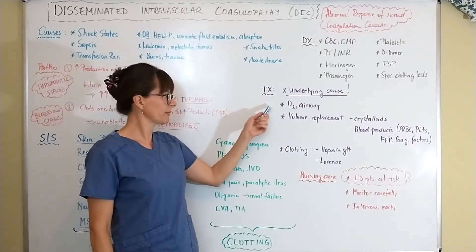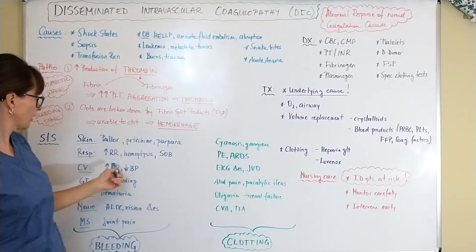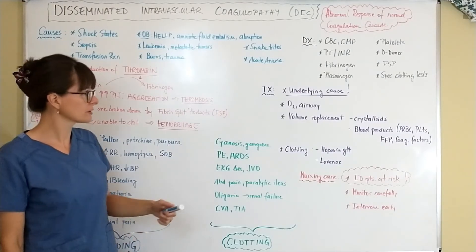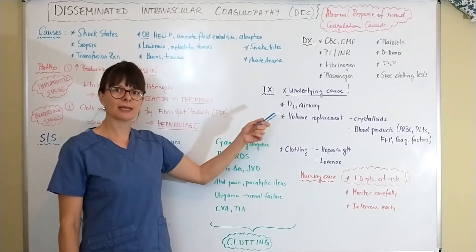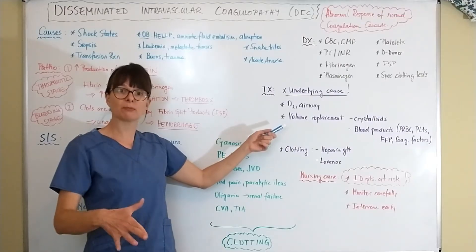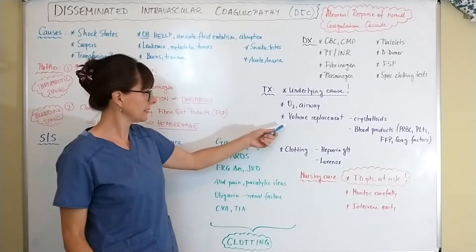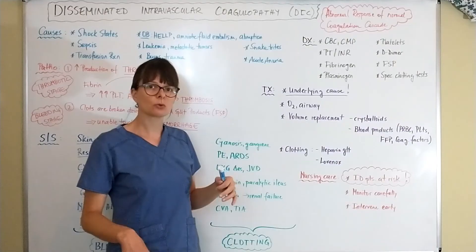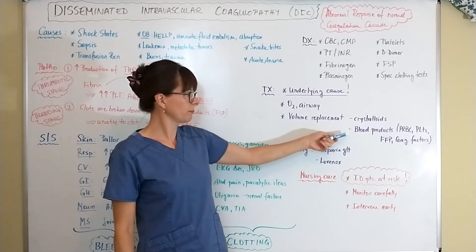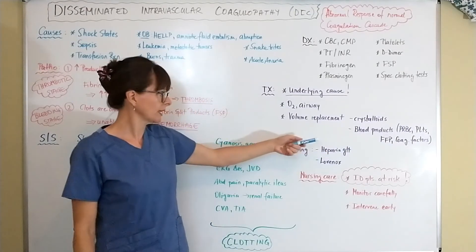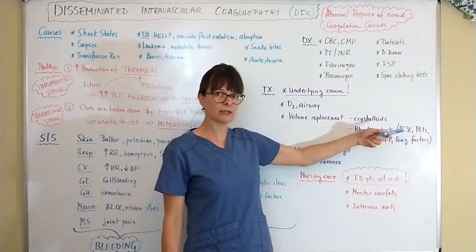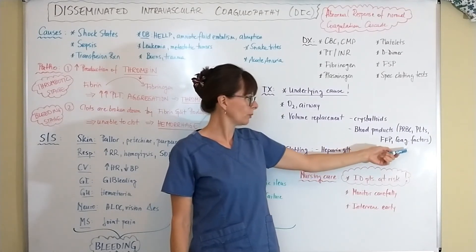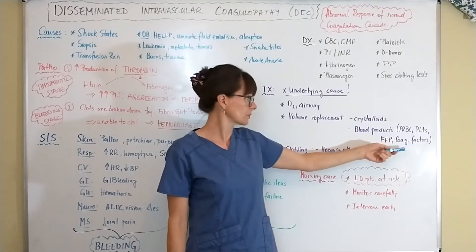Oxygen administration and airway management are always a priority given the risk of respiratory bleeding, PE, or ARDS. Volume replacement is essential as patients lose blood volume. Crystalloid IV solutions help maintain blood pressure initially. Blood products are then administered as needed — packed red blood cells if significant blood volume is lost, platelets, fresh frozen plasma, and specific coagulation factors if the patient is deficient in them.